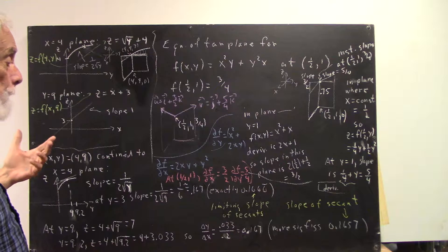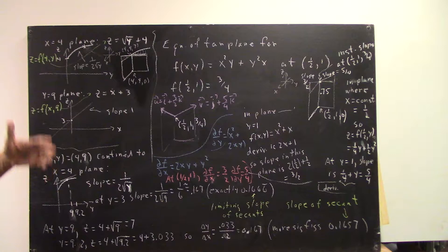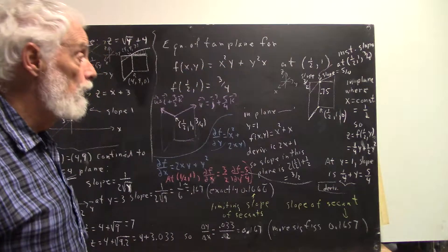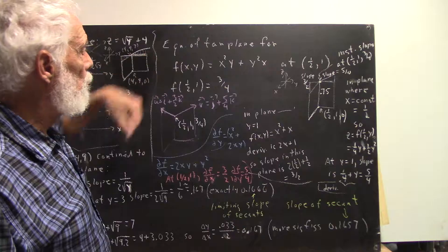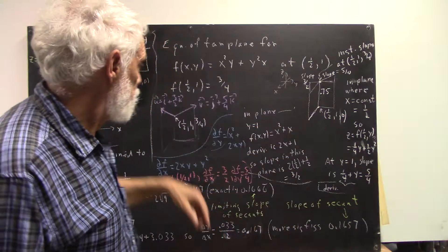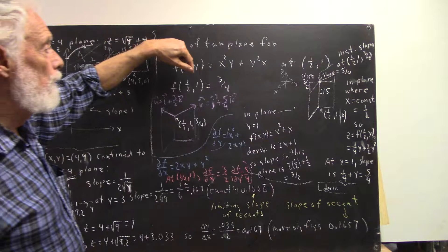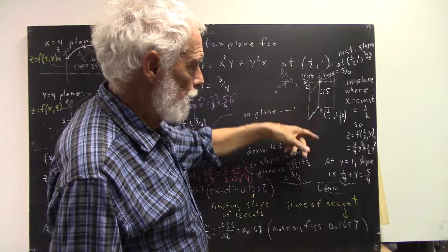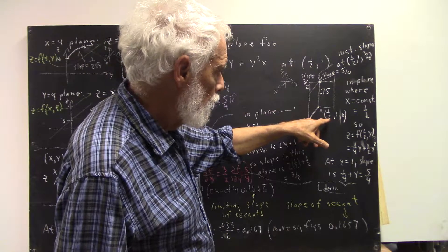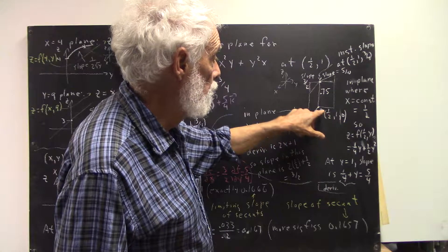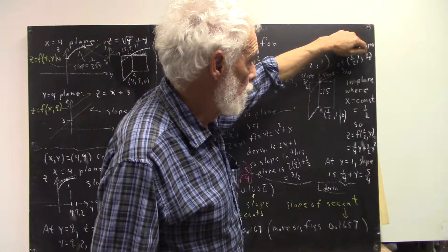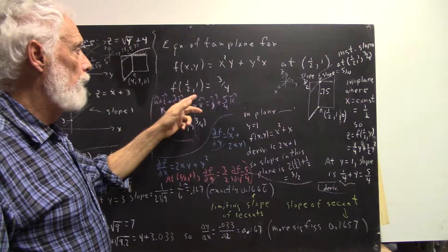The partial derivative is obtained by letting one variable be treated as a constant while the other is the variable of differentiation. We're going to apply that to a new function: f(x, y) = x²y + y²x, at the point where x = 1/2 and y = 1. At that point, f(1/2, 1) = 3/4. This gives us a picture where the point in the xy-plane is (1/2, 1, 0) and we move up to the point (1/2, 1, 3/4) on the graph.